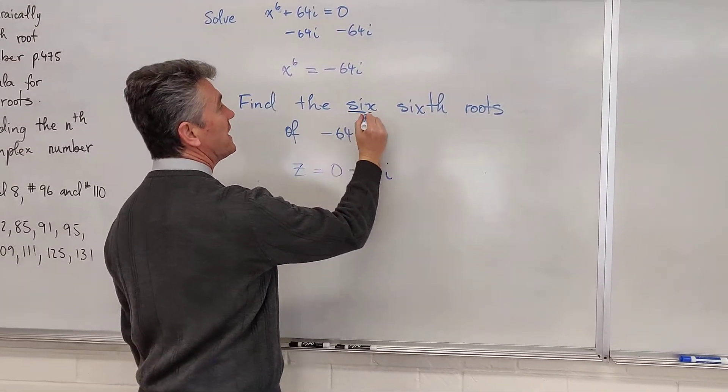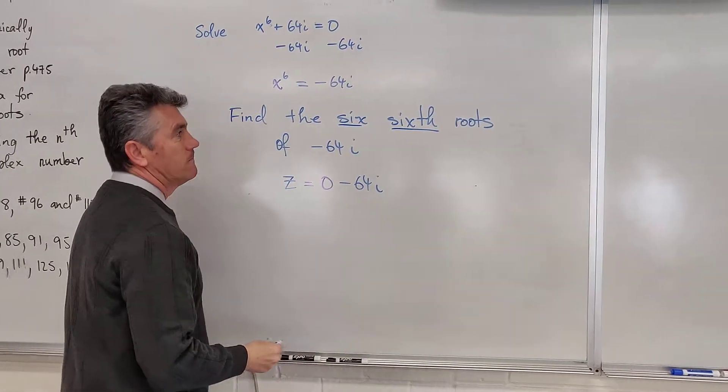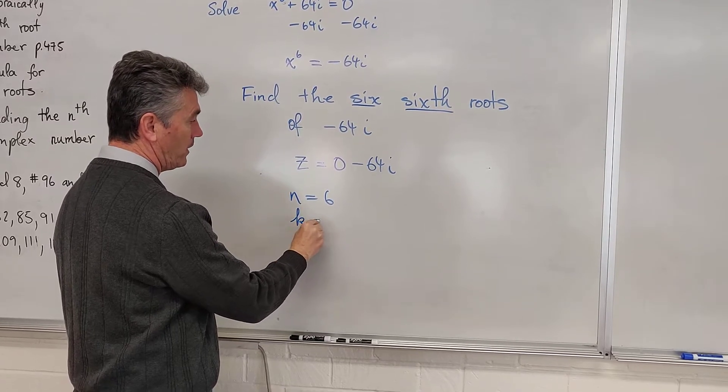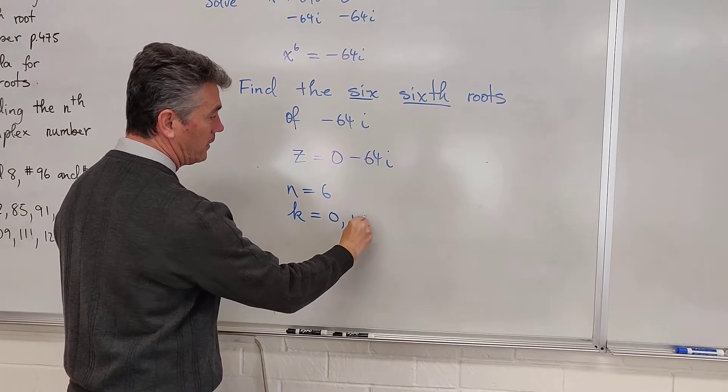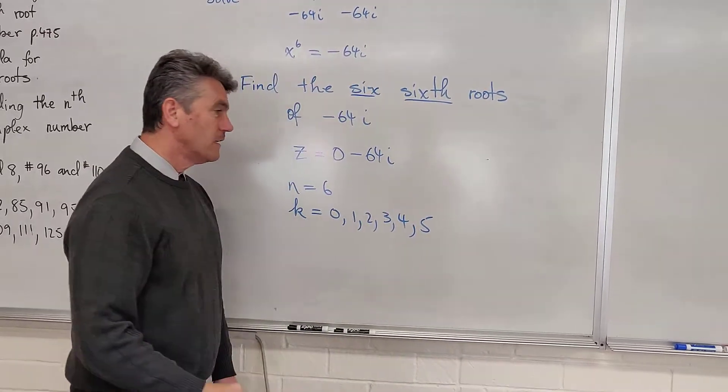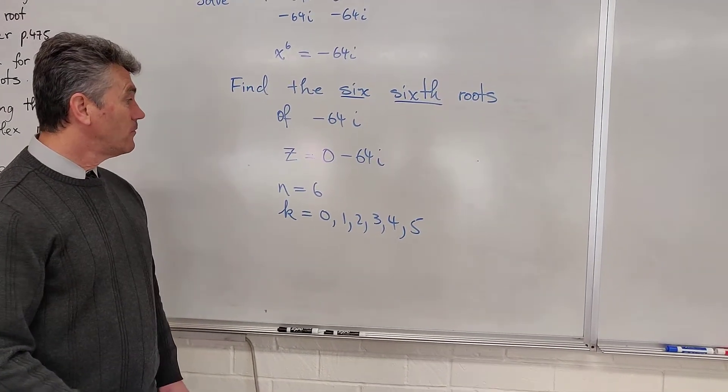Find the 6 roots. We know n. n is 6. What about k? k is 0, 1, 2, 3, 4, and 5. We're going to look for 6 roots.